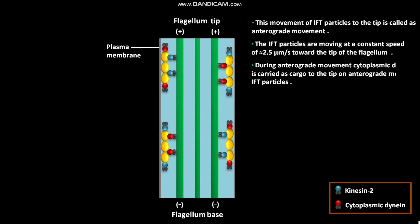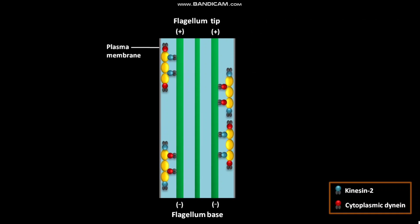During anterograde movement, cytoplasmic dynein is carried as cargo to the tip on anterograde moving IFT particles.